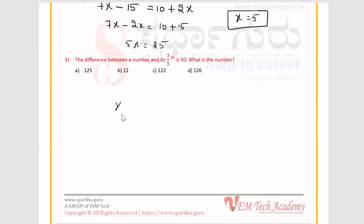So the number x, the difference minus is its 3/5 of that number, so 3/5 of x. The result is 50. Take LCM, 5x minus 3x divided by 5 is equal to 50. Do the cross multiplication here, so 5x minus 3x is equal to 50 into 5. So 2x is equal to 250, so x value is 125. Option A is the right answer.